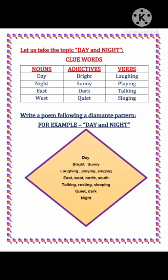The question is: write a poem following the diamante pattern. Let's see the example. The topic is day and night. Here is the final draft: Day. Bright, sunny. Laughing, playing, singing. East, west, north, south. Talking, resting, sleeping. Quiet, dark. Night. So this is called the diamante pattern, and this is the final draft.